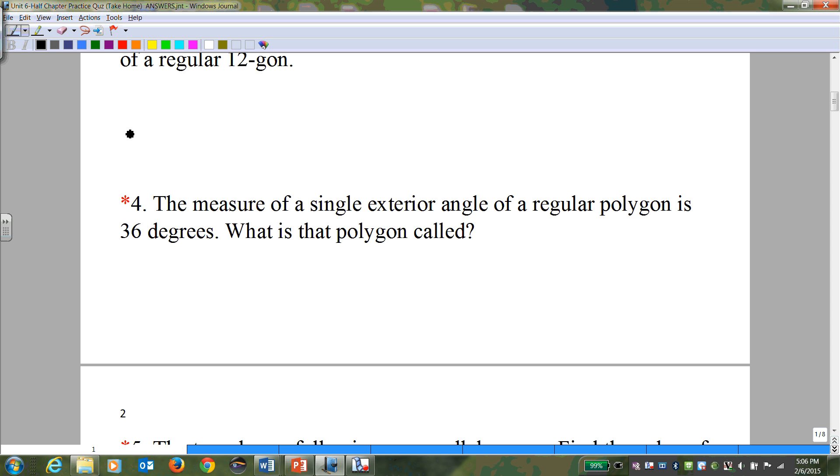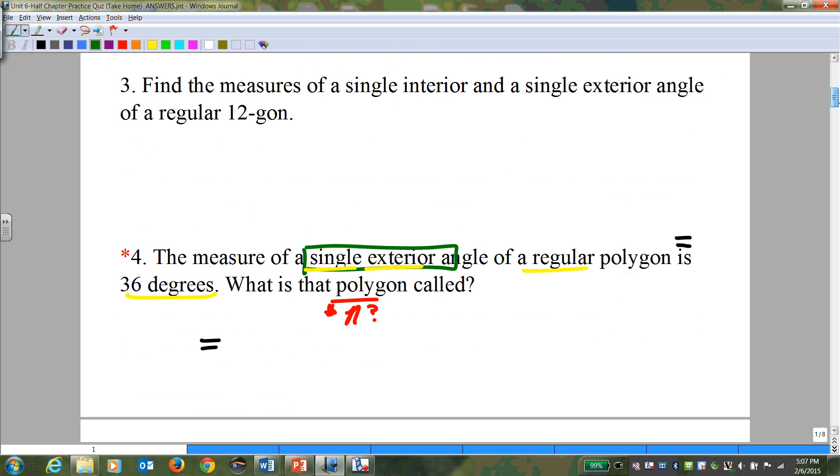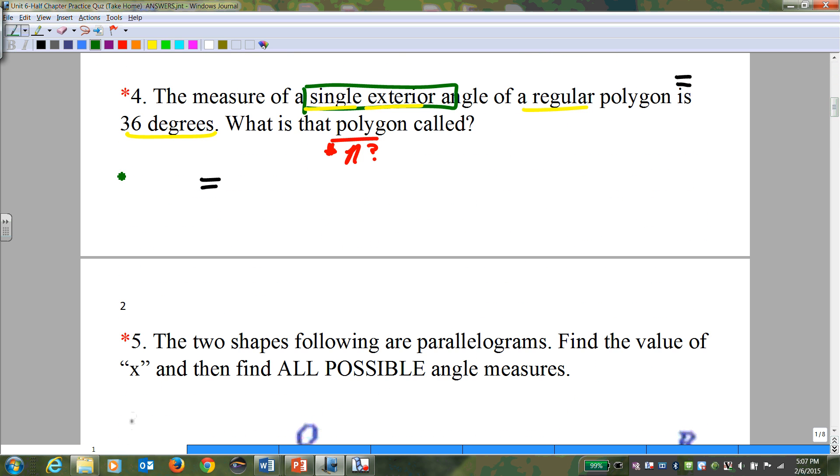This one says the measure of a single exterior angle of a regular polygon is 36 degrees. What is the polygon called? Once again, if I use the word polygon, your number of sides is unknown. That's a big hint for what you're going to find. We underline key words: a single exterior angle, it's a regular polygon, is 36 degrees. Once again, the most important word is the word is. And what is, is a single exterior angle. So we come up here and we see the single exterior angle is 360 over n. And you need to figure out where that 36 goes. And your ultimate goal is to solve for the number of sides.